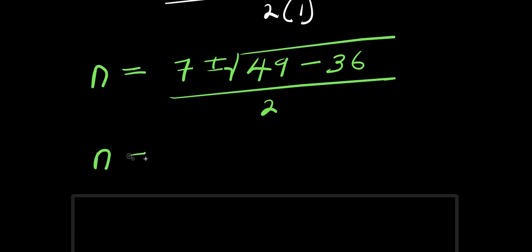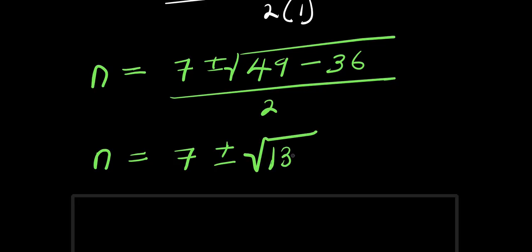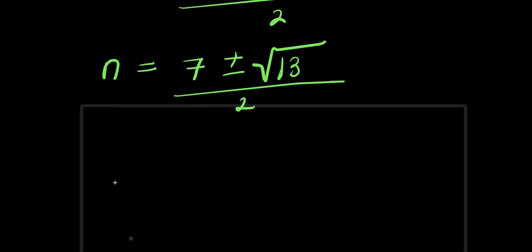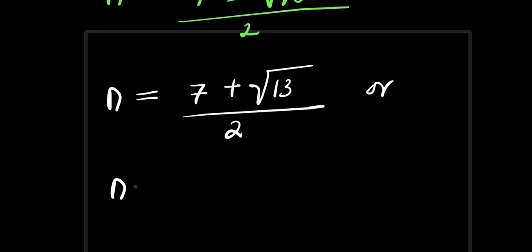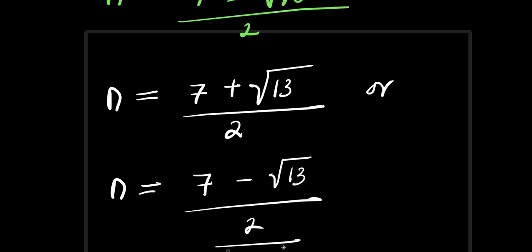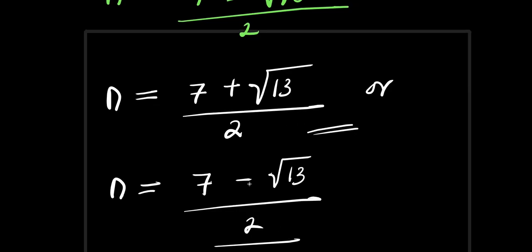So from here I have n equals 7 plus or minus square root of 49 minus 36, which is 13, so square root of 13, divided by 2. We have two values for n: n equals 7 plus root 13 divided by 2, or n equals 7 minus root 13 divided by 2.